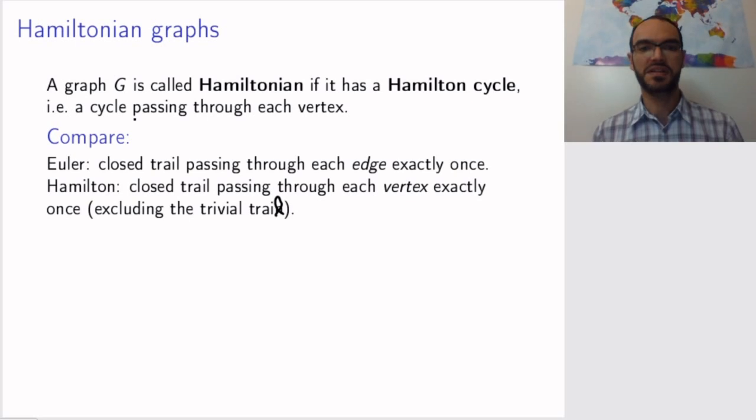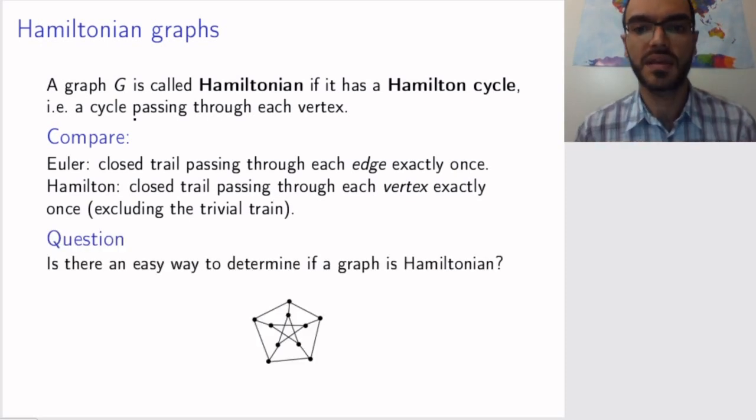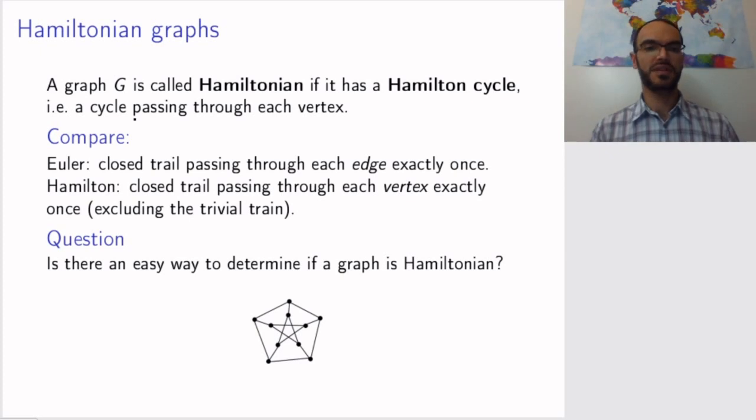But apart from this trivial example, apart from the case where you have a graph with just one vertex, you're good. Now you can ask the following question: is there an easy way to see if a graph is Hamiltonian? For Euler graphs there was - the easy way was just to count the degree. You zoom in on each vertex and count the number of edges. Can we do a similar thing with Hamiltonian? For example, this graph, the Peterson graph, is it Hamiltonian?